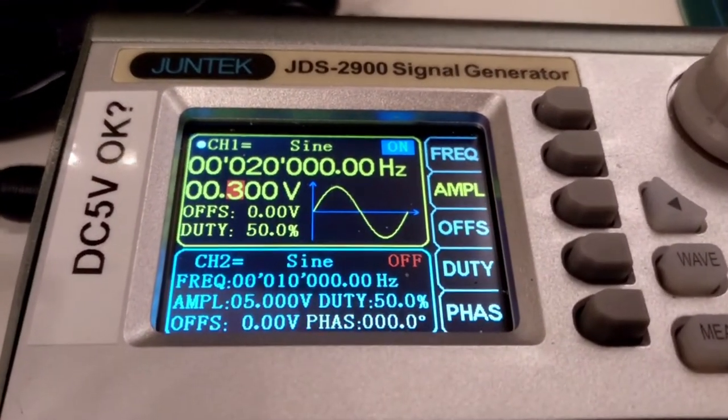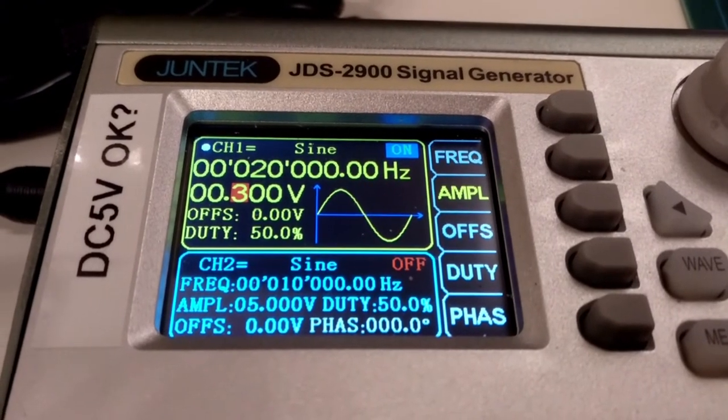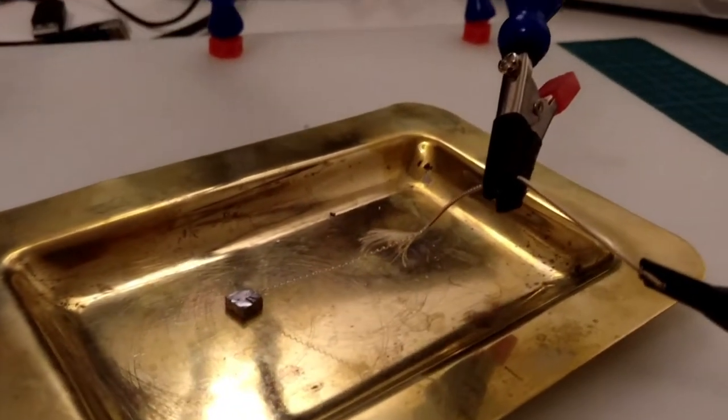The signal passed across the crystal is a 300 millivolt 20 kilohertz sine wave, no offset, 50% duty, rectified by the crystal.